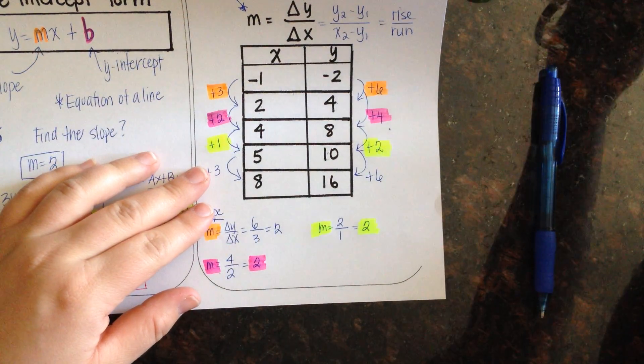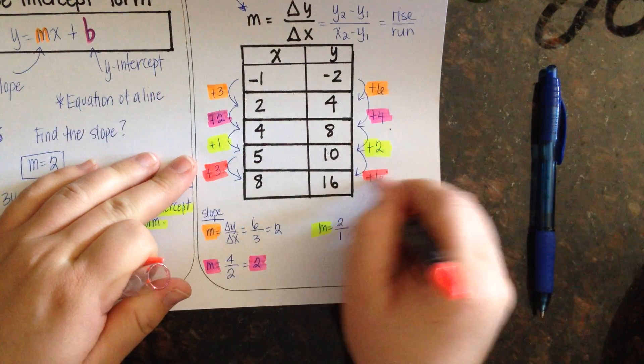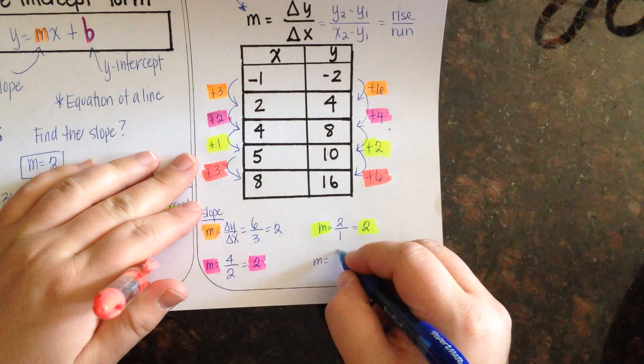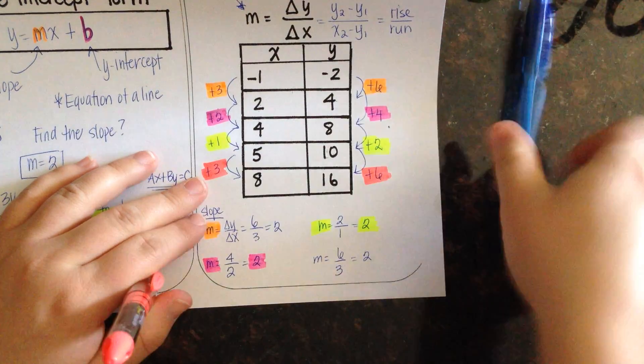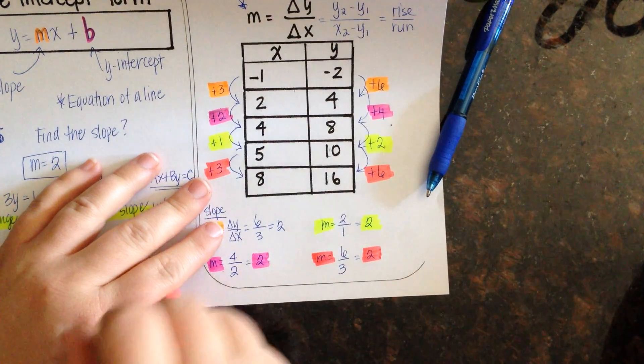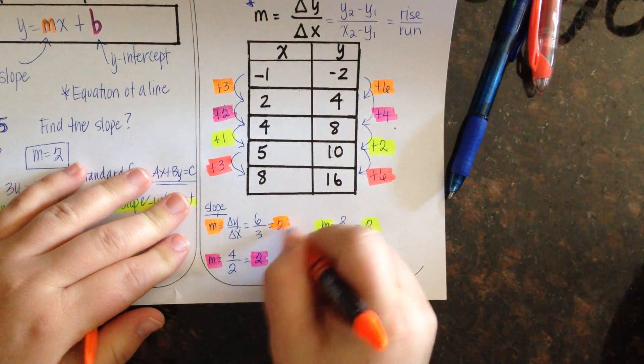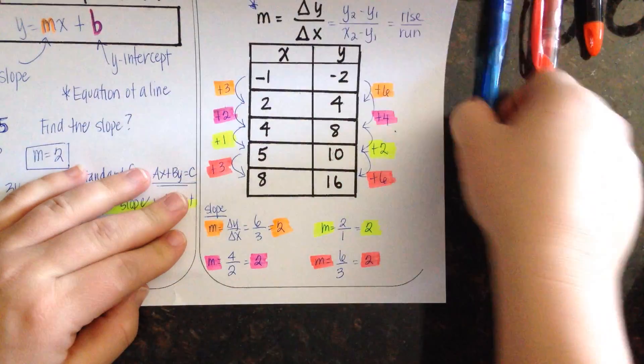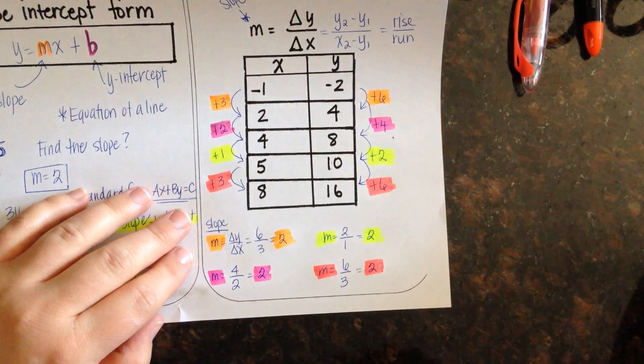And then last but not least, let's see if I can find another color. These last two, 10 to 16, was a change in 6. My x values was a change in 3, and when I reduce that, I get a slope of 2. So, you can see that this table of values has a slope of 2. This table of values, no matter what the values are, should be a linear equation because all of the slopes are going to be 2.